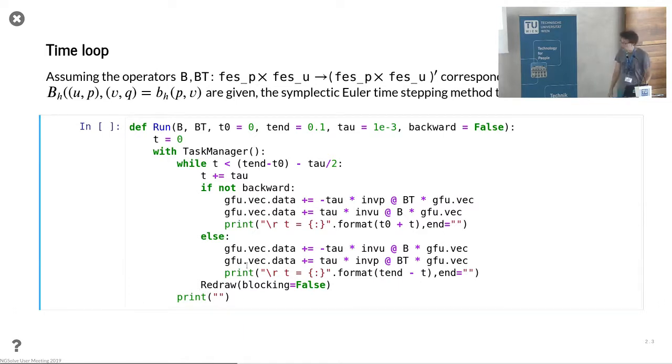We define the time loop, now depending on the operators B and B transpose, which should provide some operator or matrix applications. What we see here is a symplectic Euler discretization, where we apply minus B transpose with the inverse of the mass matrix of the pressure space times the solution u.